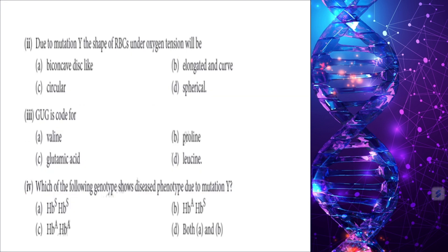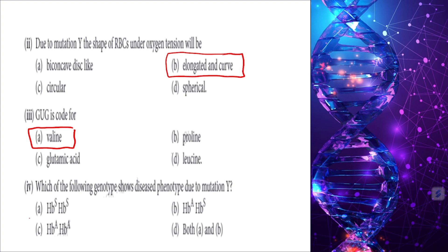Due to mutation Y (GUG coding for valine), the shape of RBC under low oxygen tension becomes elongated and curved — the sickle shape seen in sickle cell anemia. Which genotype shows a diseased phenotype due to mutation Y? The answer is HBS/HBS.